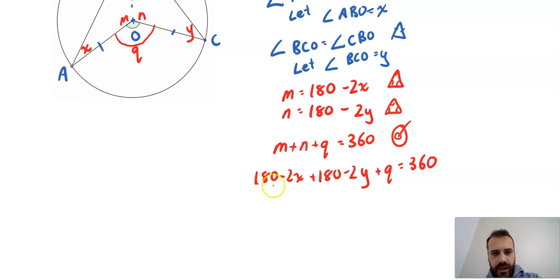If I take the 180 and move it to the other side minus 180, and that one minus 180, I'm left with negative 2X negative 2Y plus Q equals 0. That means Q equals 2X plus 2Y.